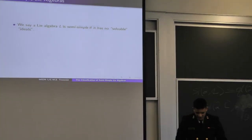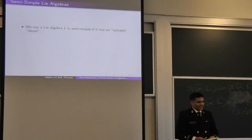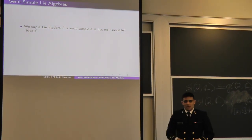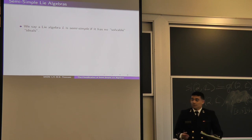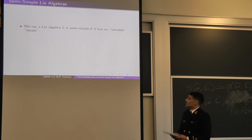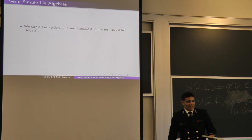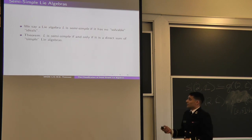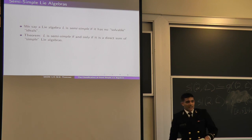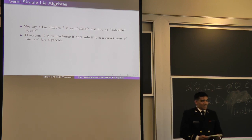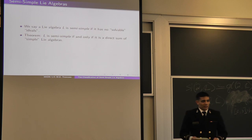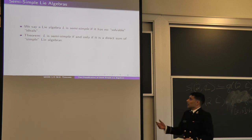It would be nice to know what a semi-simple Lie algebra is. We say that a Lie algebra is semi-simple if it has no solvable ideals. Almost half of my paper dealt with moving from this definition to the equivalent one: a semi-simple Lie algebra is a direct sum of simple Lie algebras. For the purposes of this talk, we'll be using this as our baseline.